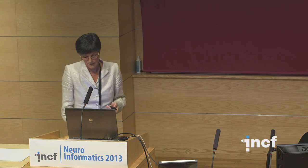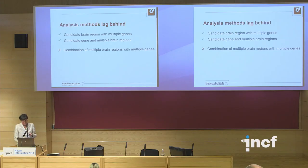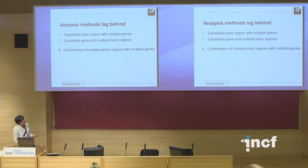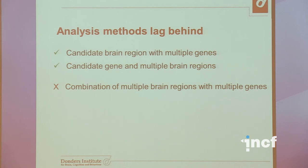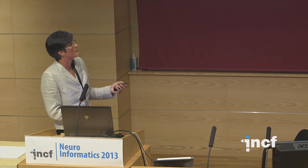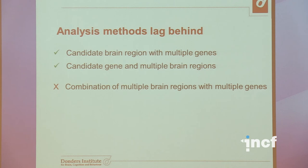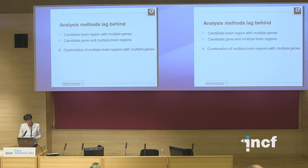Where data analysis and data handling can still be improved is in combining data on multiple brain regions with data on multiple genes simultaneously. We can use a candidate brain region and integrate multiple genes, or use a candidate gene and look at multiple brain regions, but we cannot yet do both simultaneously — the dimensionality of the data becomes prohibitive. This is an area where a lot of methodological development will be needed.